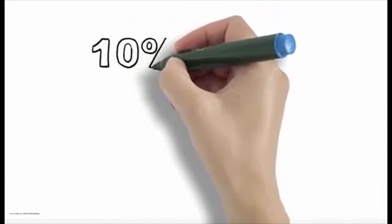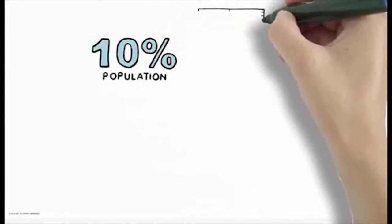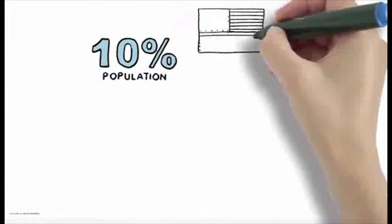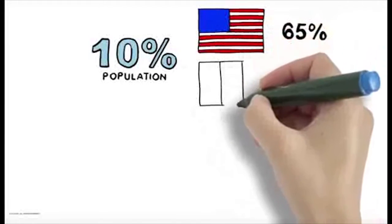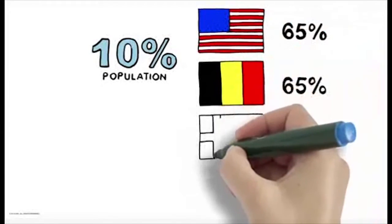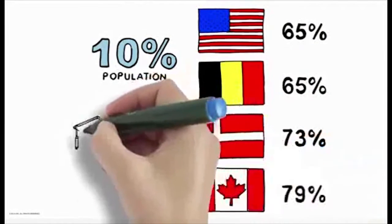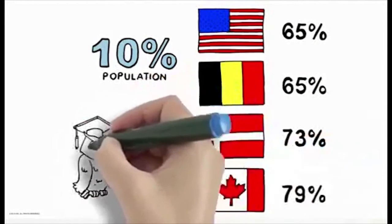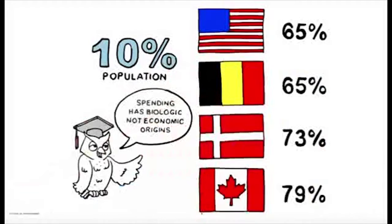The costliest 10% of the American population accounts for 65% of total spending, exactly the same as Belgium and Denmark and Canada. The costliest 10% of their populations account for 73% and 79% of spending respectively, suggesting that concentrated spending has biologic, not economic origins.